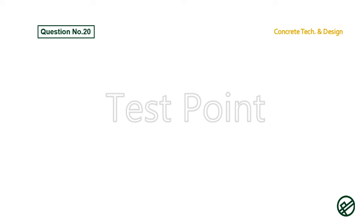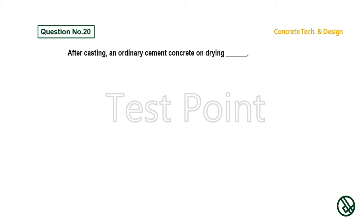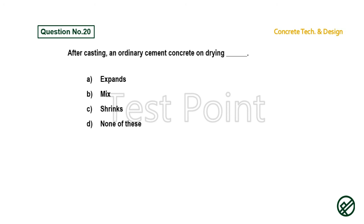Question number 20: After casting, an ordinary cement concrete on drying — Option A: Expands. Option B: Mixes. Option C: Shrinks. Option D: None of these. Answer is Option C: Shrinks.